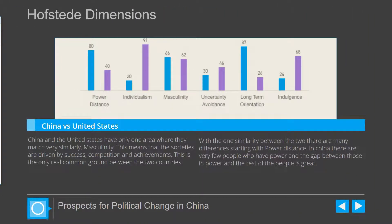Overall, China and the United States differ greatly on the Hofstede dimensions. However, there is one area where they have a very close match. That area is masculinity. This means that both societies are driven by competition, success, and achievements. This is the only common ground on the Hofstede dimensions for China and the United States.